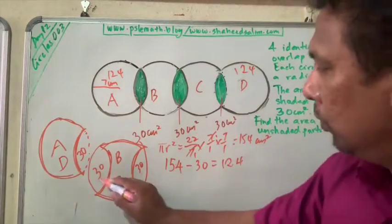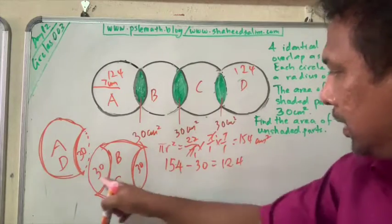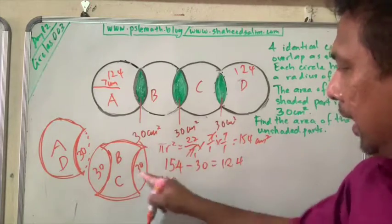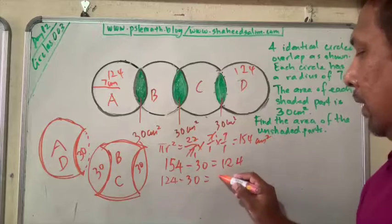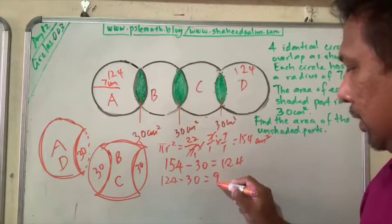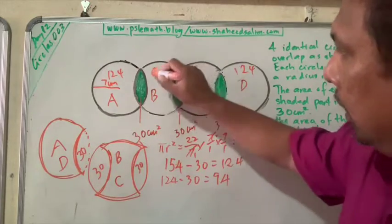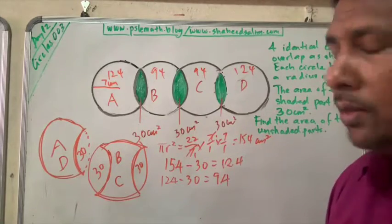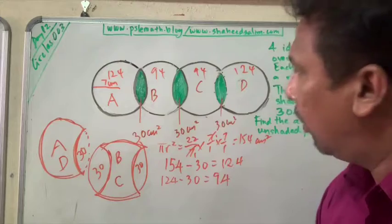Now, if you minus another 30 - 154 minus 30, and then you get 124, you minus another 30, you get the area of B and C each. So it's 94. So you get 94 square cm here, 94 square cm here, and you add them all together, and you'll get the area of the unshaded part.